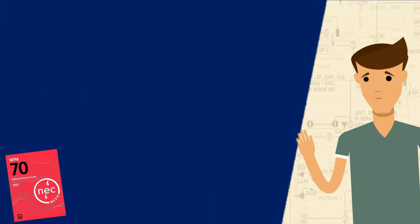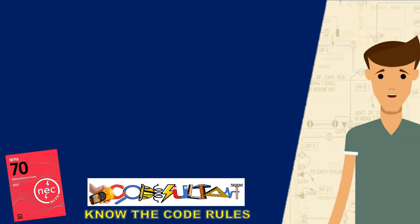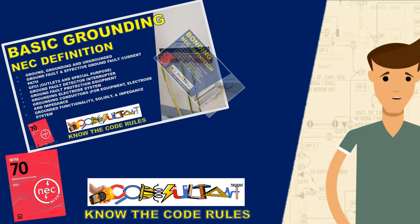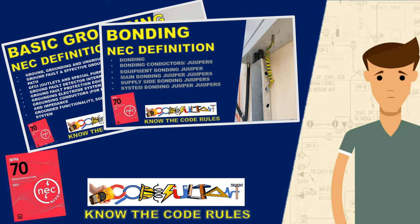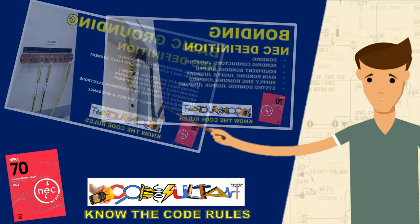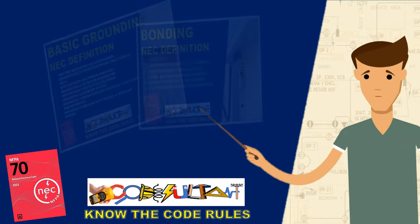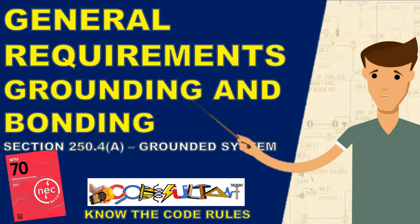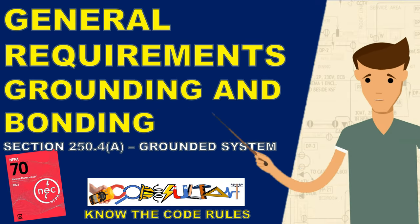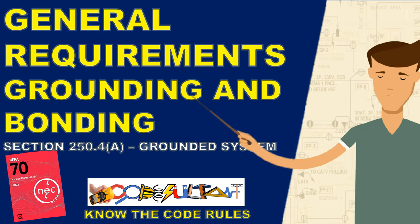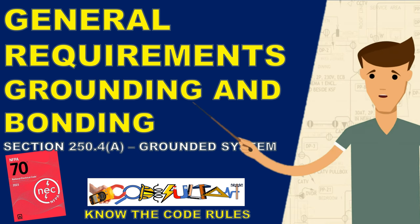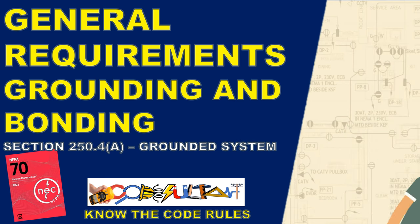Welcome to the Codesultant channel. In our previous videos, we explored the definitions associated with grounding and bonding. Today, we will delve into the first rule of Article 250, which focuses on the general requirements for grounding and bonding as stated in Section 250.4A, which is the grounded system. Without any delay, let's dive right into this interesting topic.